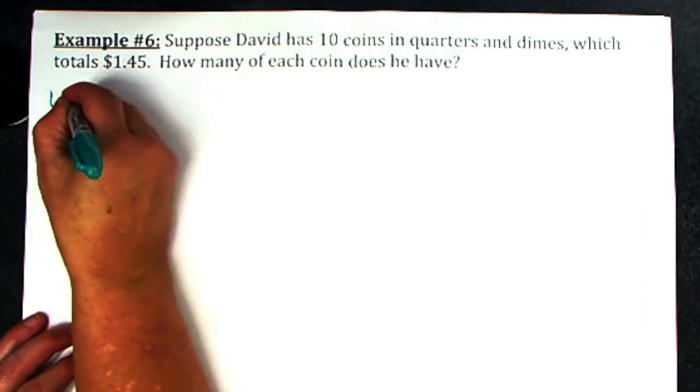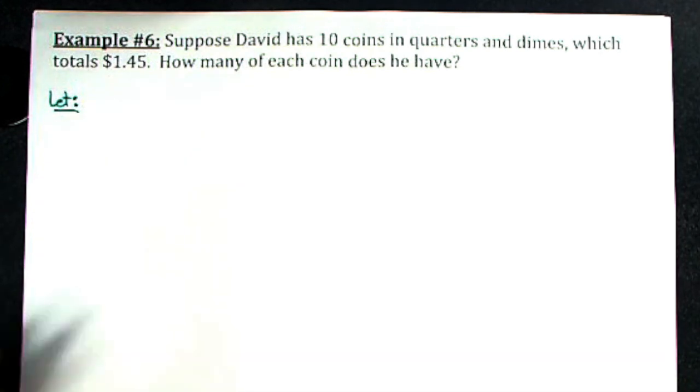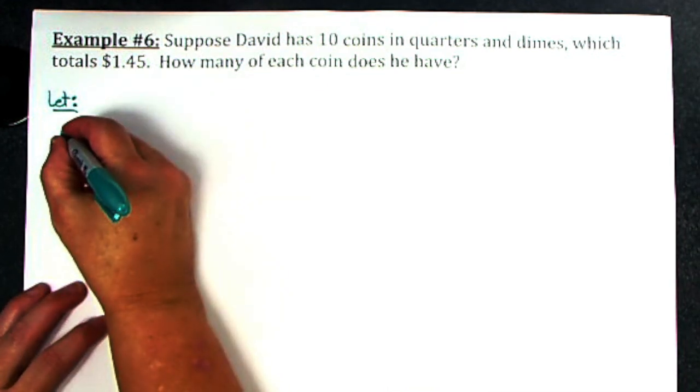When we define our variables, we've got to do it in a couple different ways. This one's going to be a little bit different. One of them - I don't care which, either the quarters or the dimes - has to be x because I can only have one variable.